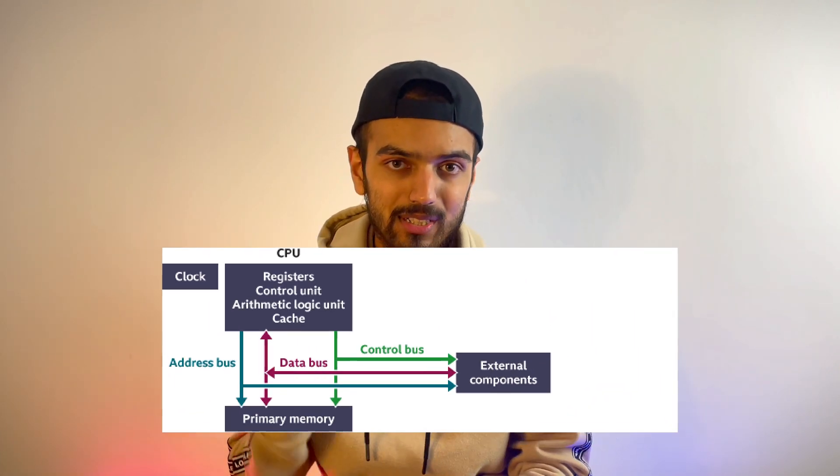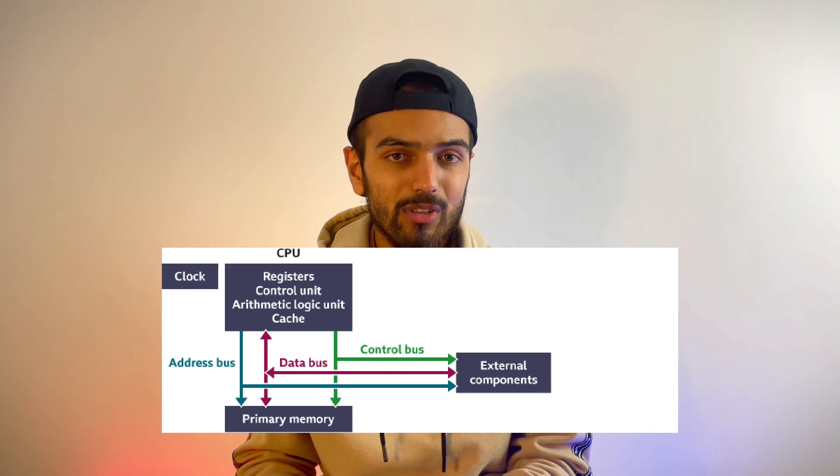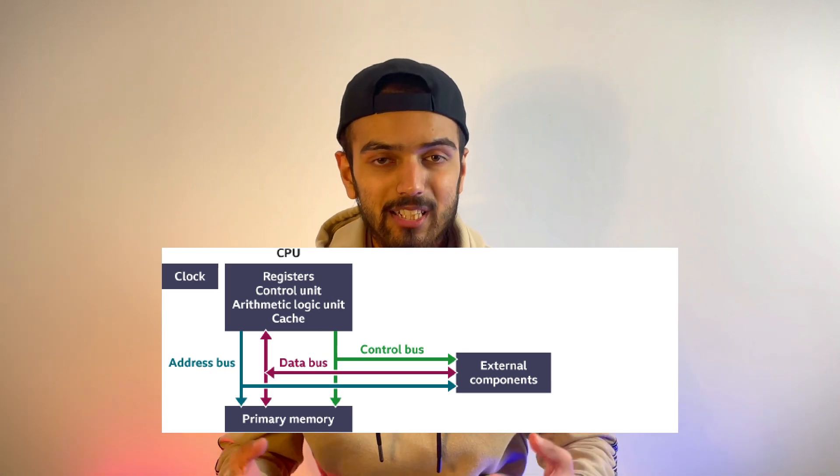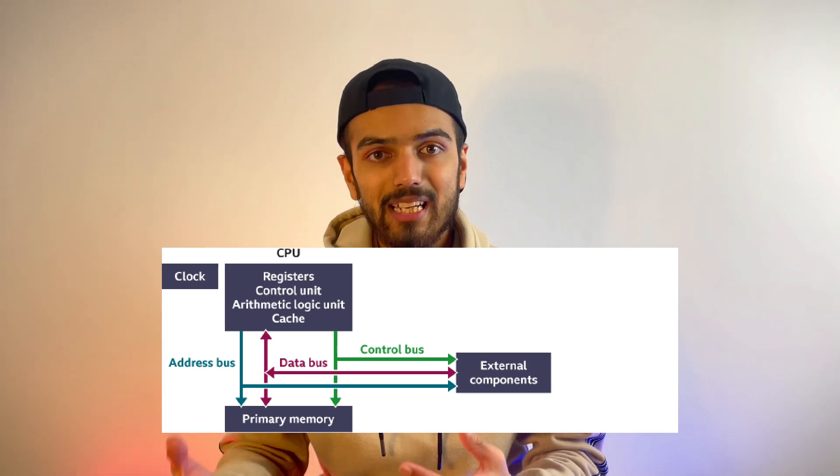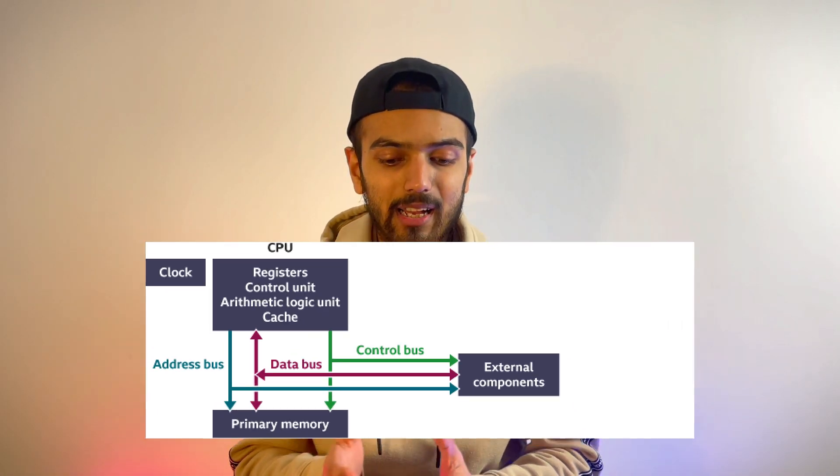This is what you learn in A-level because it's a little bit advanced. You have different types of buses — address bus, data bus and so on. These buses help communicate, and basically you will learn the CPU in much more detail.